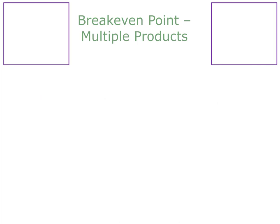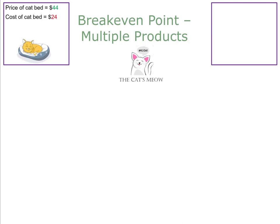Now we're going to calculate the break-even point for a company that has two products. The company called the Cats Meow sells two different types of cat furniture. The first is a cat bed, with a sales price of $44 and a variable cost of $24. The company sold 6,000 cat beds.